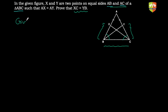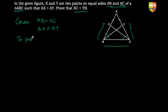Given: AB is equal to AC, and AX is equal to AY, where X and Y are points on AB and AC respectively. To prove: XC is equal to YB.